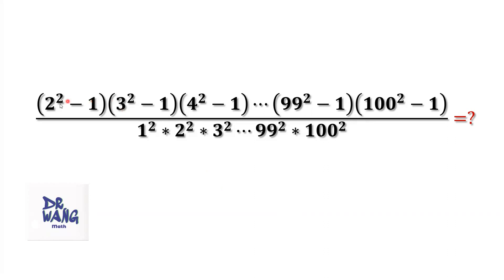The numerator is 2 squared minus 1 times 3 squared minus 1 times until 100 squared minus 1, divided by 1 squared times 2 squared times 3 squared until times 100 squared.